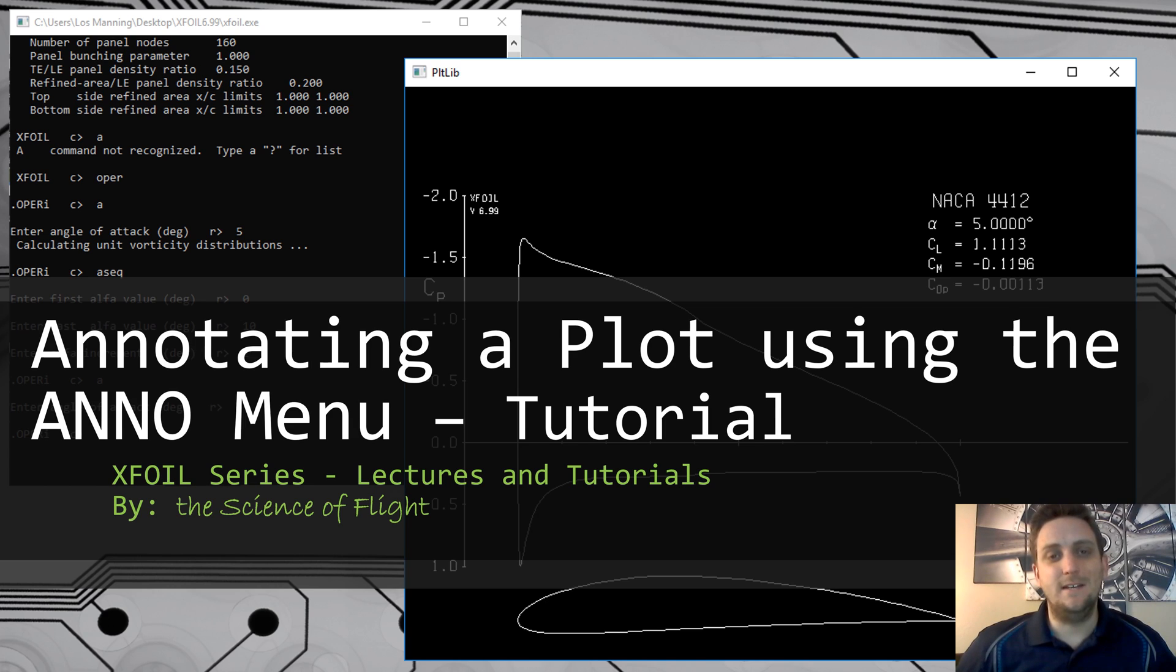In this video, we're going to look at annotating a plot using the Anno menu. This is useful because it allows you to highlight or call attention to different parts of the plot that might be interesting. This is brought to you by the Science of Light. Let's get to it.